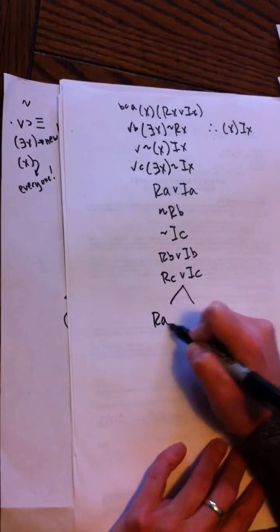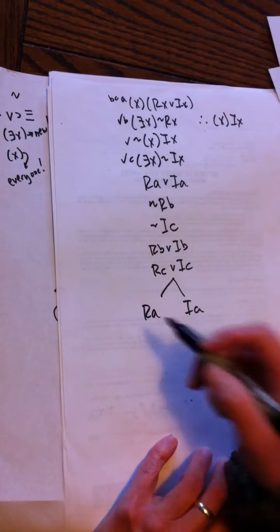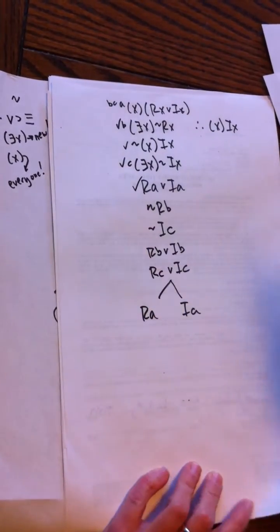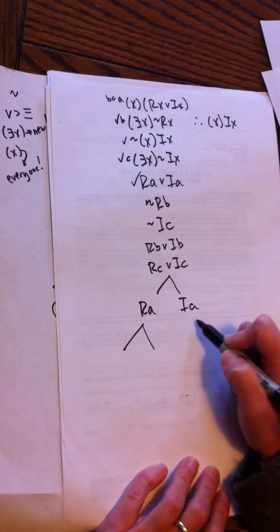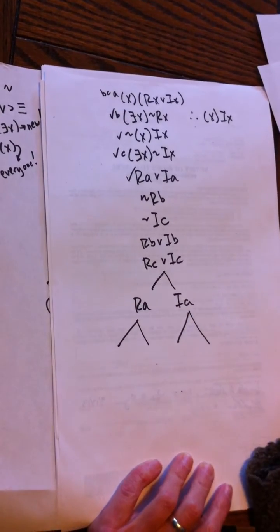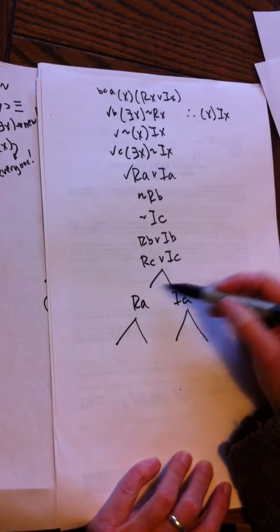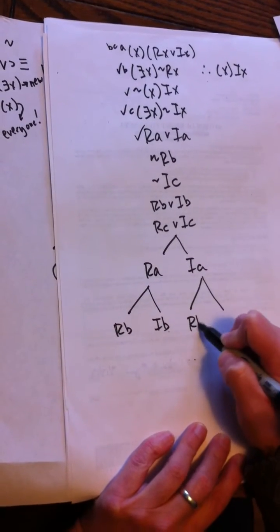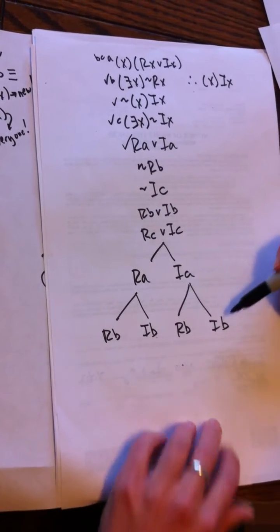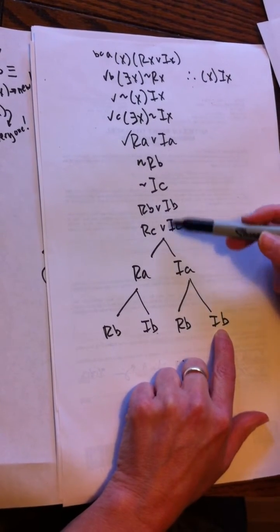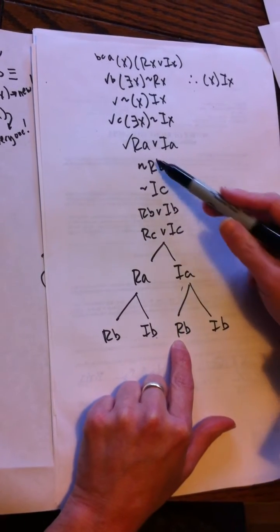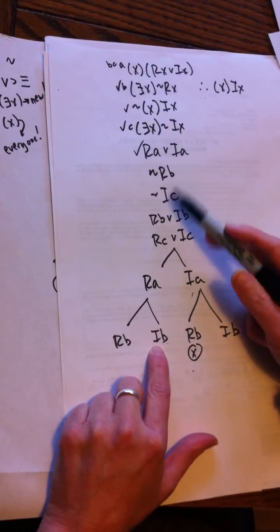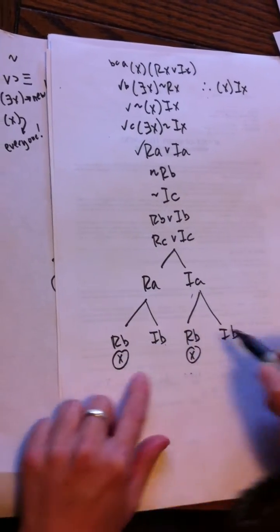Ra, Ia—nothing is crossing out yet. Go on to this b one. Again, I have to perform the rule on every open path. Got two open paths: Rb, Ib, Rb, Ib. Hopefully some of these are going to cross off—not the Ib, but the Rb's will. Ib's aren't, but again those Rb's are.